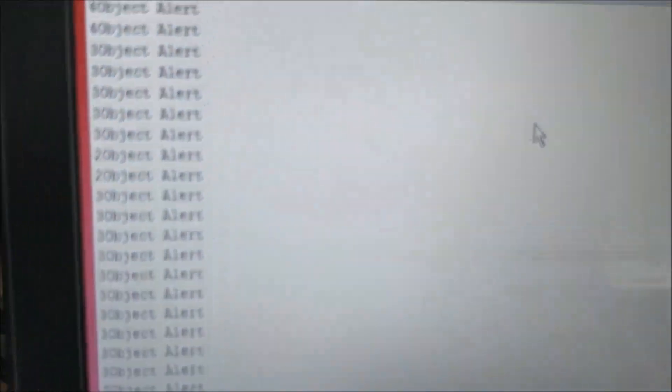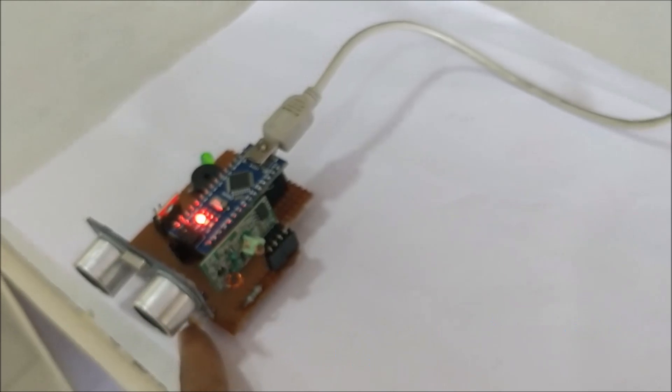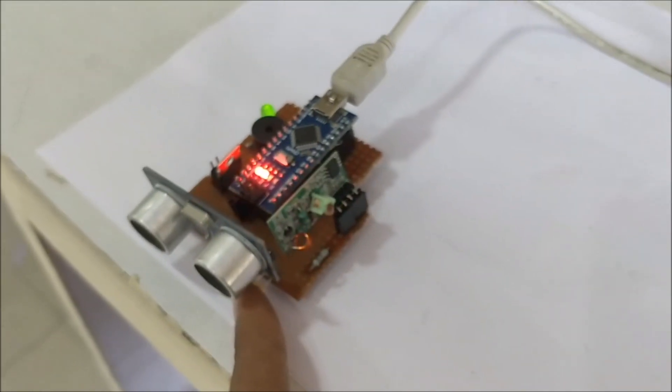You can also see in the serial monitor that an object has been detected at a particular distance. Now you can also check the LDR by blocking the light source.